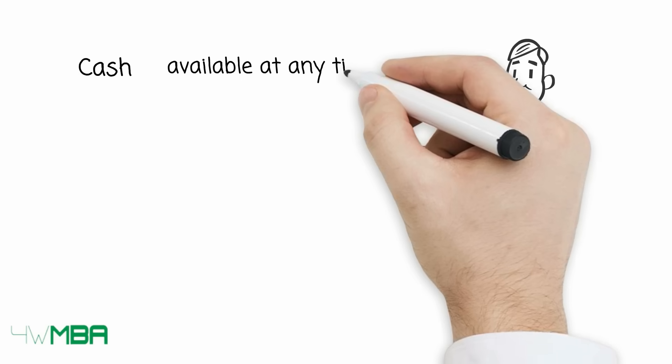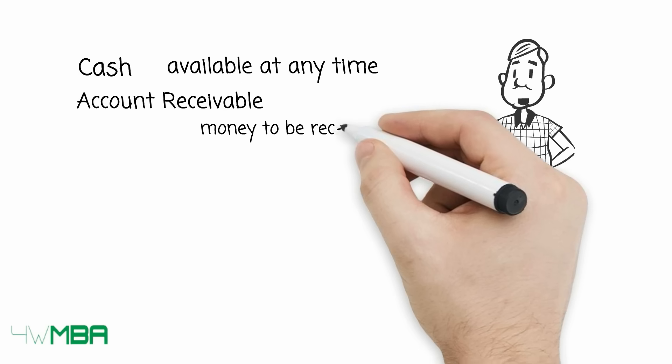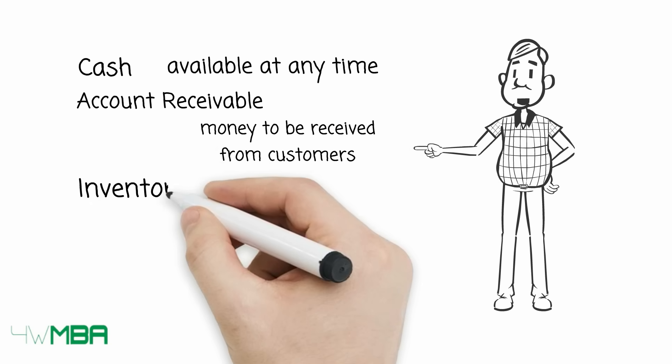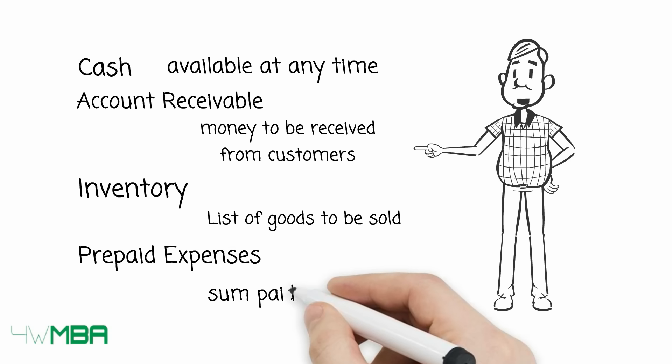Cash is available at any time. Accounts receivable is the sum of money to be received from customers. Inventory is a list of goods to be sold. Prepaid expenses are sums paid in advance.